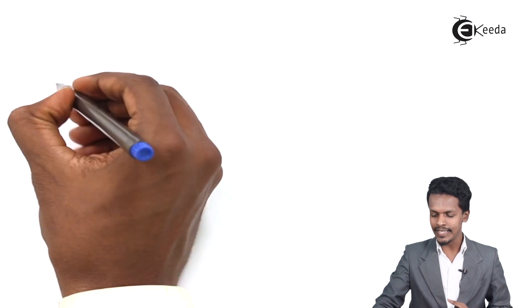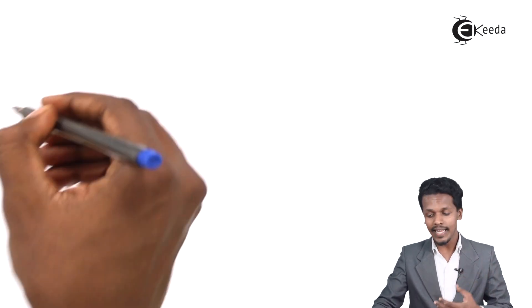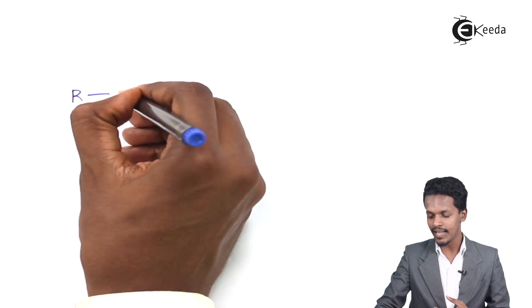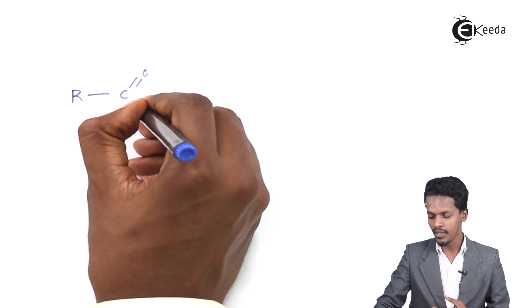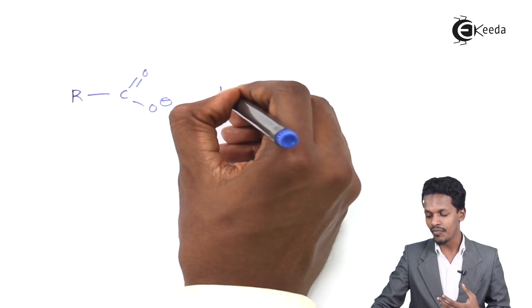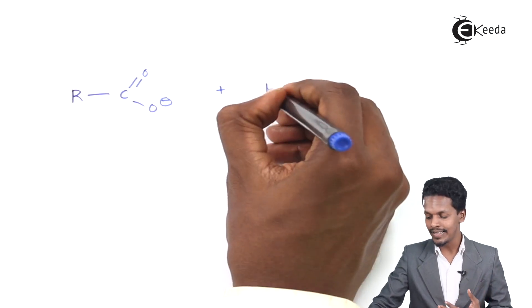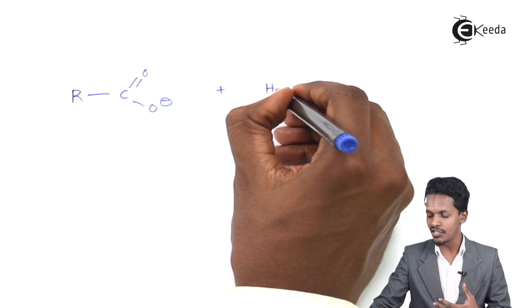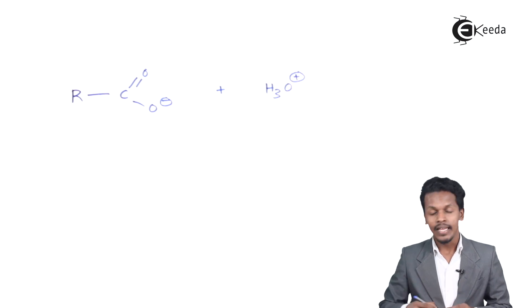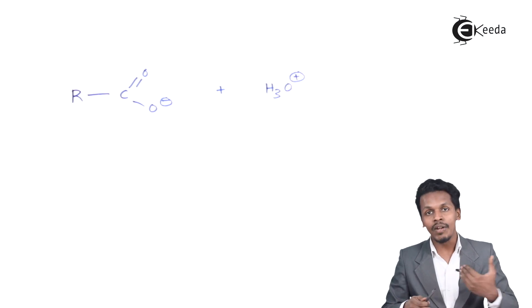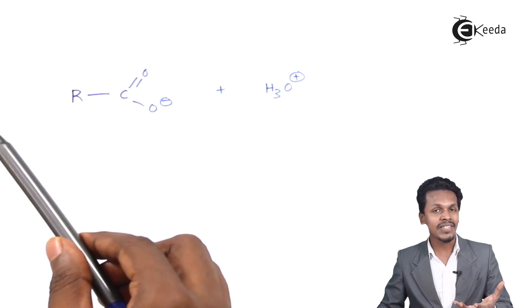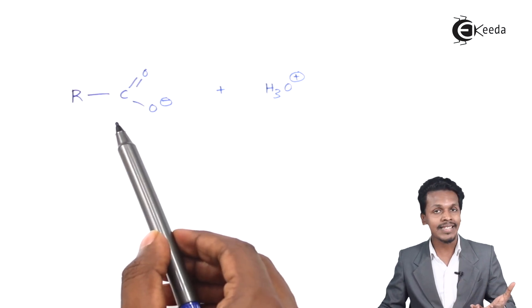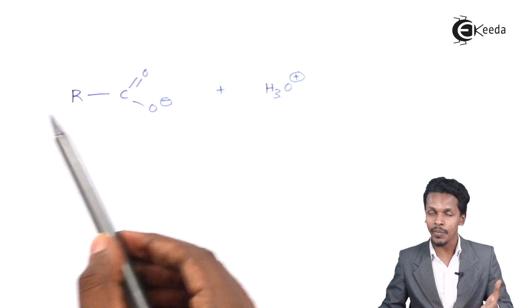In the previous lecture we understood the carboxylate ion, which we can represent as R–C(=O)–O⁻. Along with that, we also understood that the hydrogen moves away with H₂O in the form of H₃O⁺. The more easily the H⁺ ion moves away from the carboxylic acid, the more readily the carboxylate ion is produced.